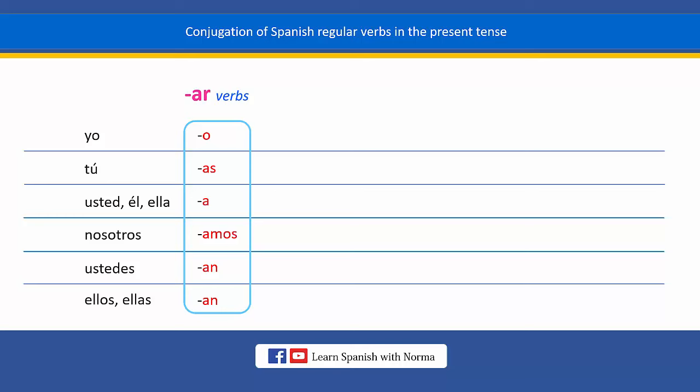The verb "to speak" in Spanish is hablar. This is the infinitive form of the verb "to speak" in Spanish. The infinitive is the most basic form of a Spanish verb. While in English, infinitive verbs are preceded by the word "to," as in "to speak," in Spanish all infinitives are only one word, and one group of infinitive verbs in Spanish ends in AR.